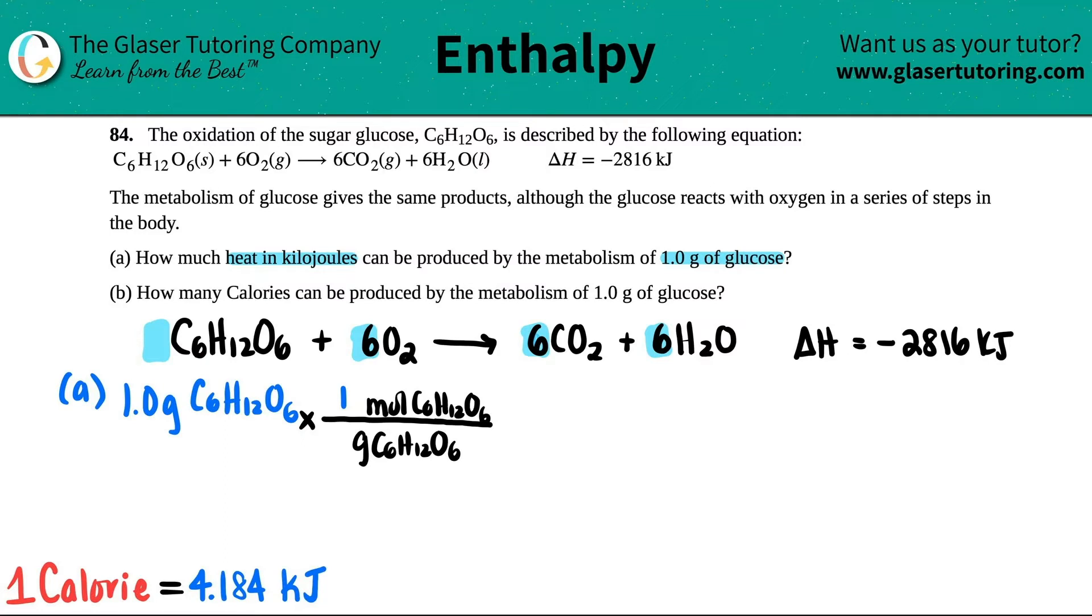I got 6 carbon, so 6 times 12.01, plus 12 hydrogen, plus 6 oxygen. So I get roughly 180.156. Okay, cancel out the gram. And now we're at moles.